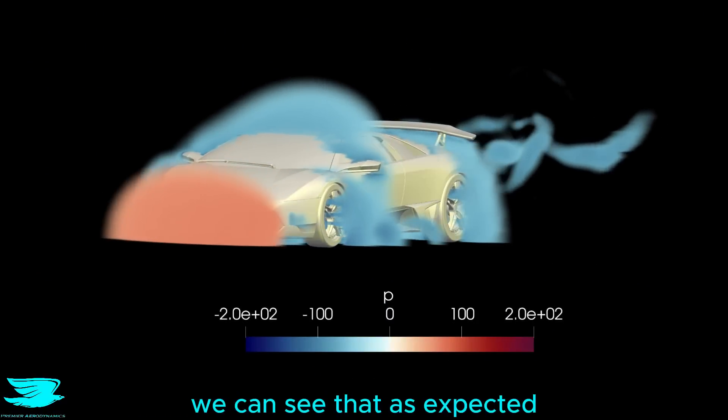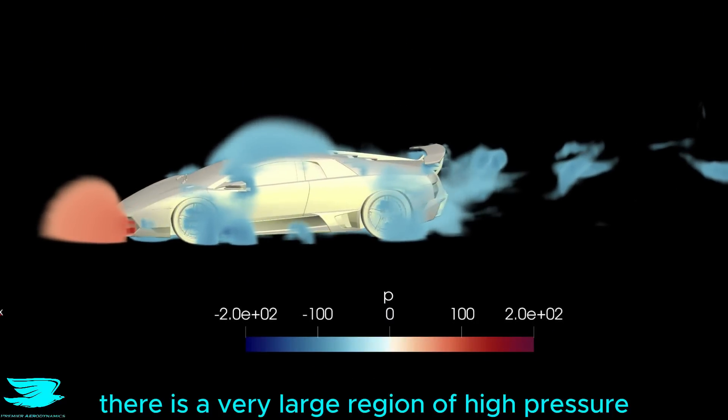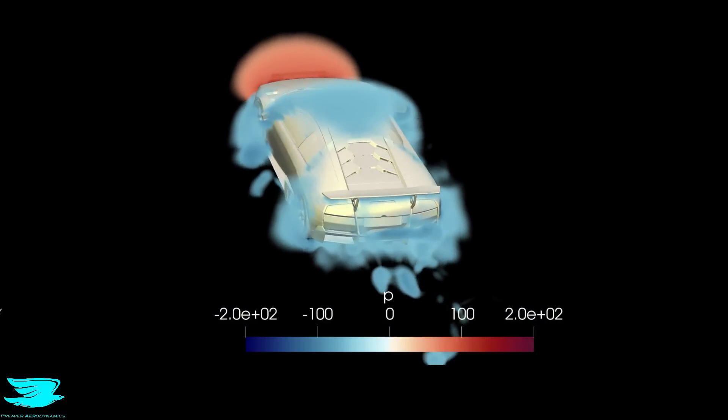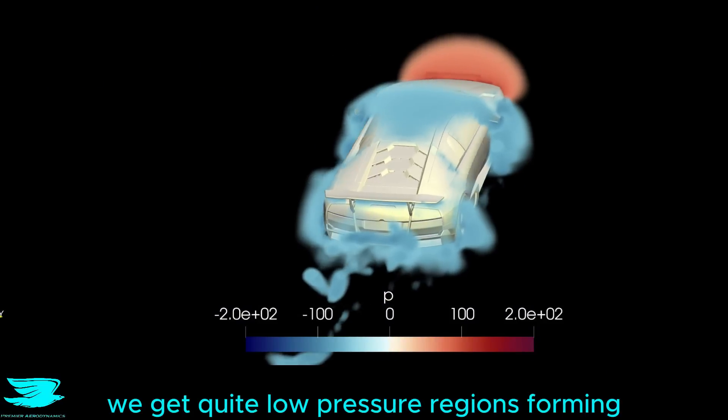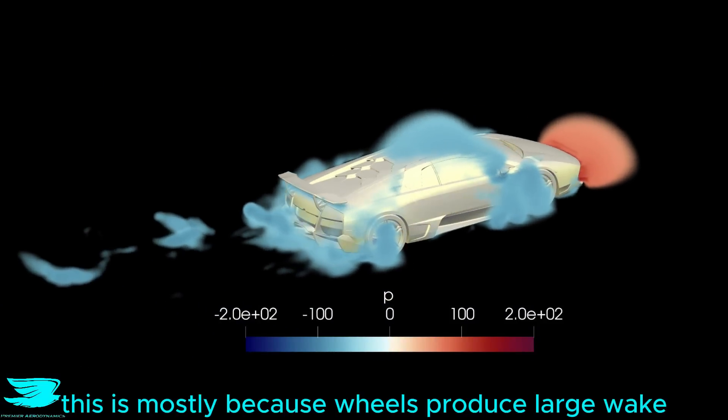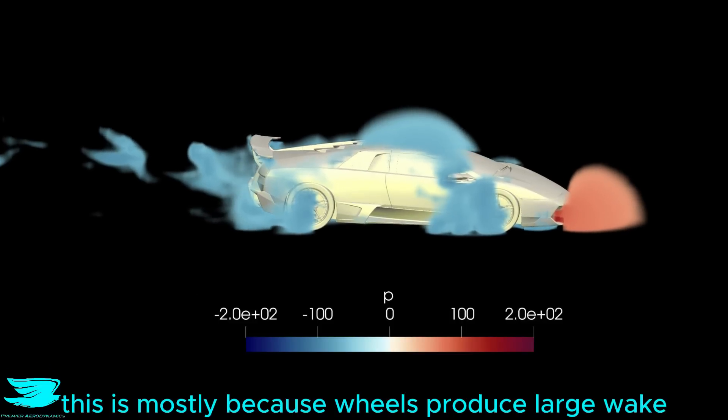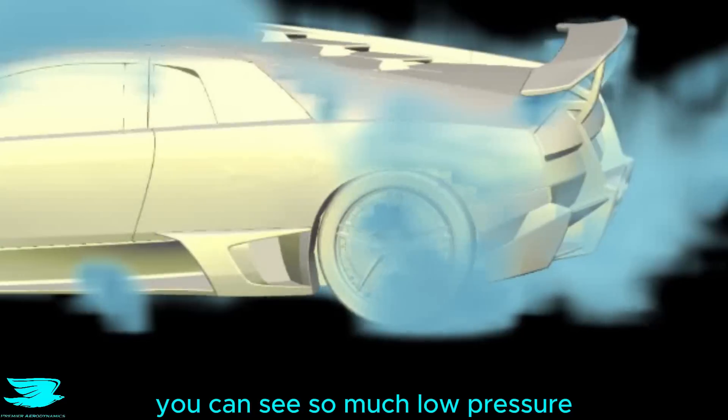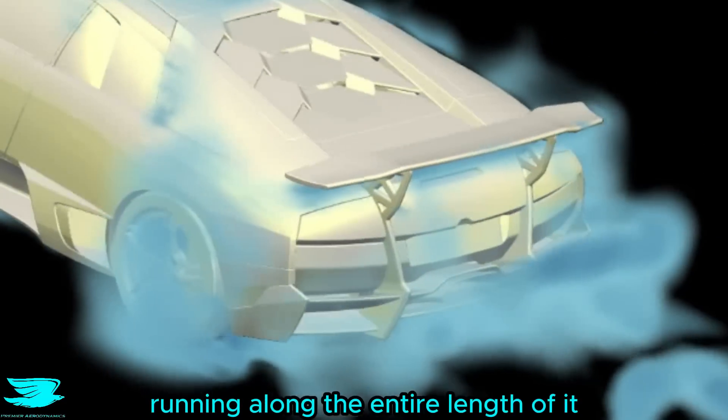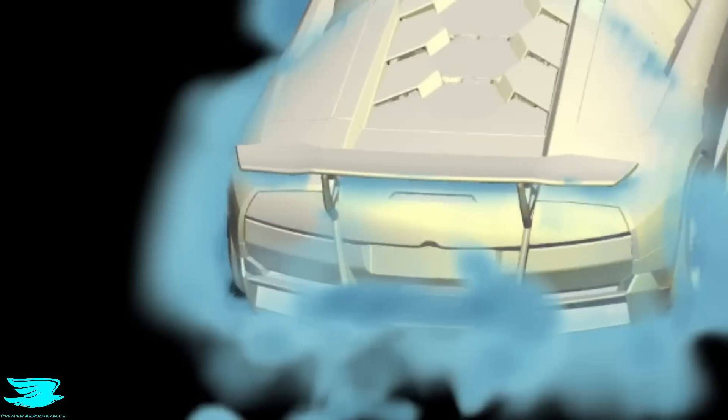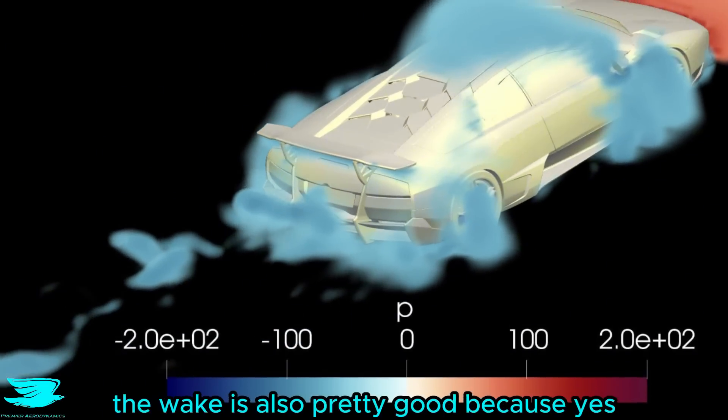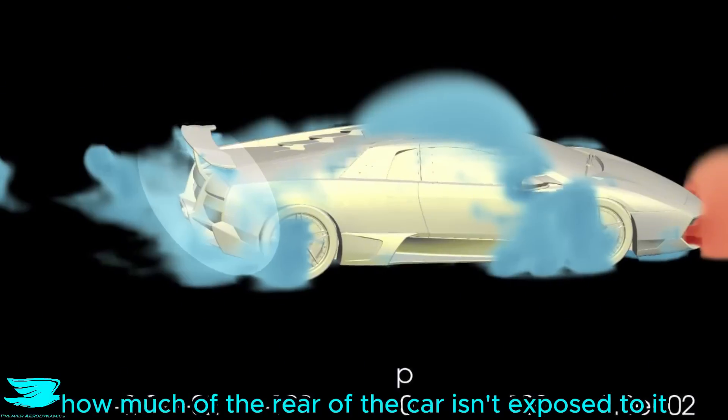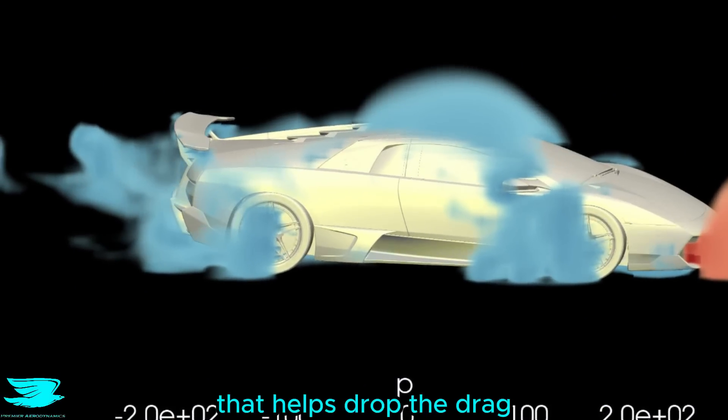Looking at this pressure plot, we can see that, as expected, there is a very large region of high pressure at the front. That is very difficult to get rid of. But around the wheels, we get quite low pressure regions forming. This is mostly because wheels produce large wakes, and much of that low pressure is from that. Looking at the wing, you can see so much low pressure running along the entire length of it. That indicates a well designed wing. The wake is also pretty good because yes, there is a region of quite low pressure, but look how much of the rear of the car isn't exposed to it. That helps drop the drag.